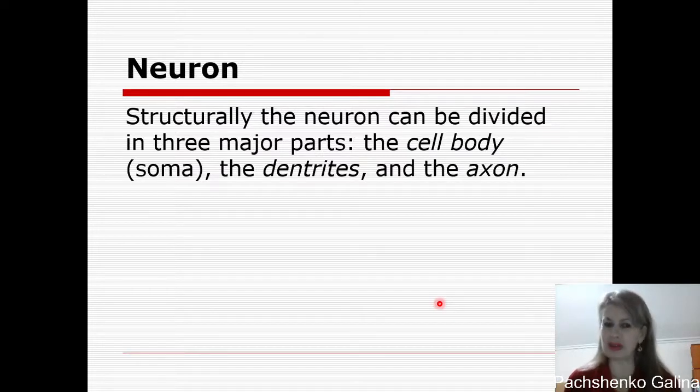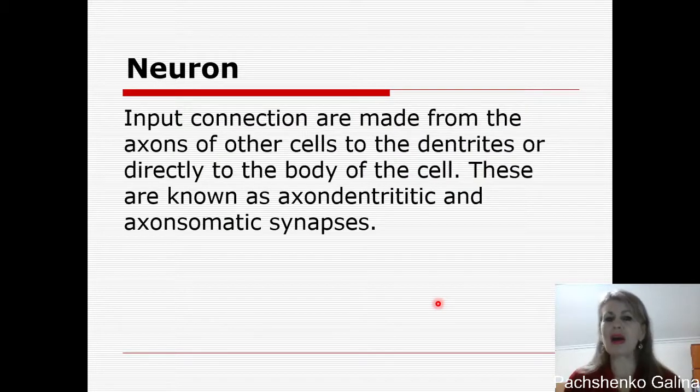Biological neurons have the soma, the dendrites and the axon. Input connections are made from the axon of the cells to the dendrites or directly to the body of the cell.